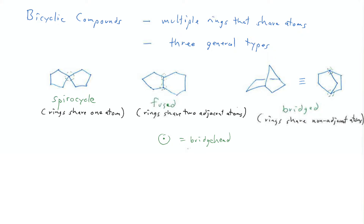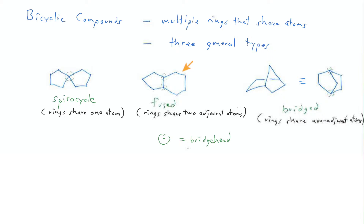The next kind of bicyclic compound is a fused bicycle, which has two adjacent atoms that are shared between the two rings. So we have two bridgeheads. You can think of them as bridgeheads because there are multiple bridges that connect them. Going through the ring on the left from the top bridgehead, you'd go through a three-atom bridge; going through the ring on the right, a four-atom bridge; and going straight down, a zero-atom bridge.